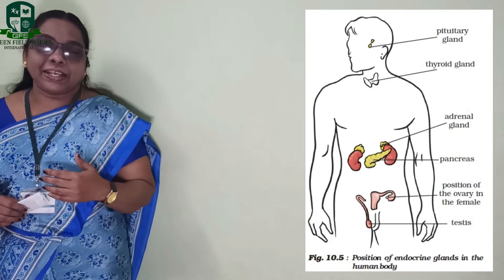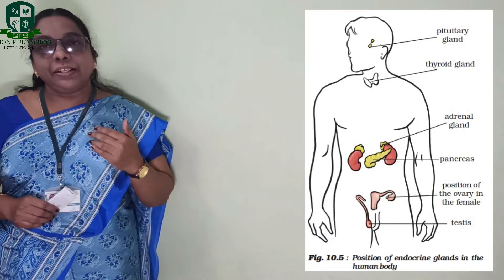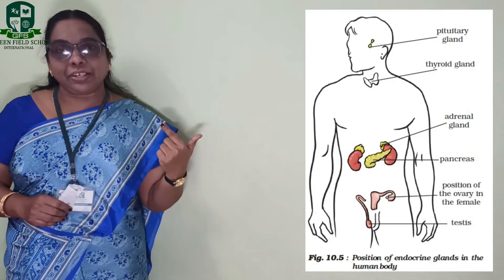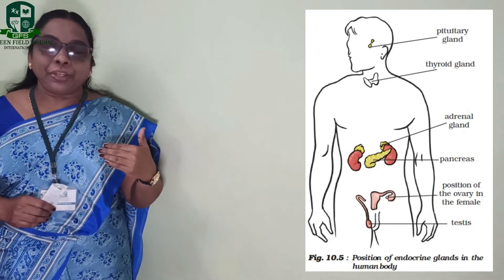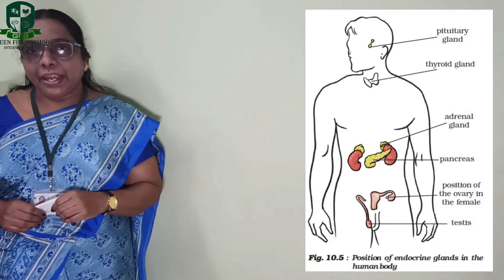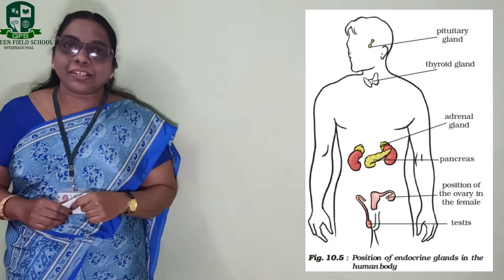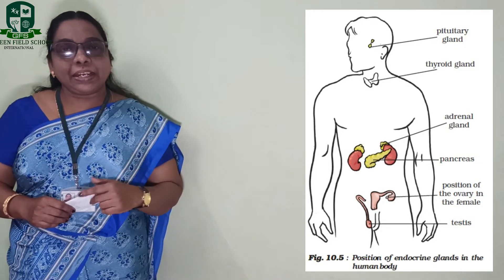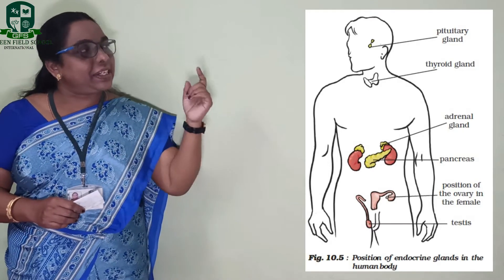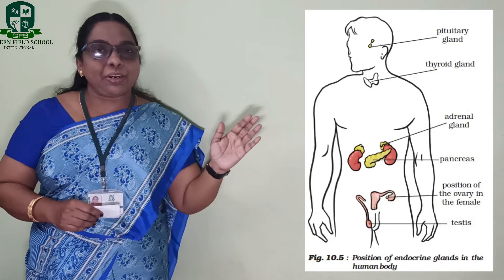The second gland we already discussed is the thyroid gland, present near the neck region. The third is the parathyroid, on the back side of the thyroid gland. The fourth is the pancreas, below the duodenal region. The fifth is the adrenal gland, present on top of the kidneys. The sixth is the gonads — testes and ovaries. There is also the pineal gland in the brain and the thymus gland located near the heart.